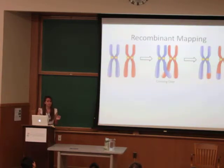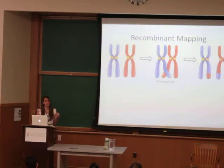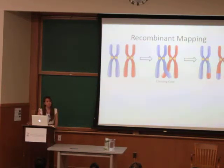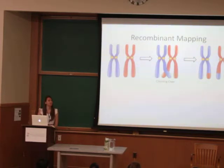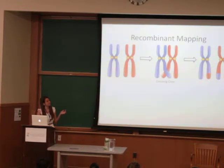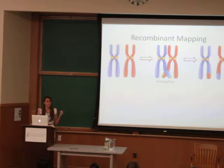Like humans, stickleback are diploid, meaning that they inherit one set of chromosomes from their mother and one set from their father. During the formation of sex cells, maternal and paternal chromosomes can undergo crossing over, during which they exchange genetic information. As this diagram shows, the result of crossing over is chromosomes that contain genetic information from both the mother and the father.